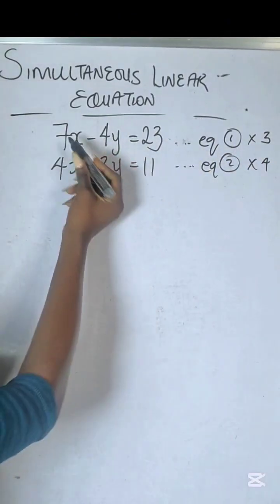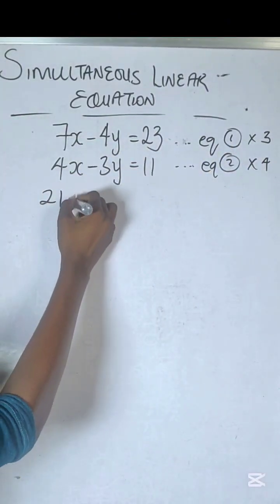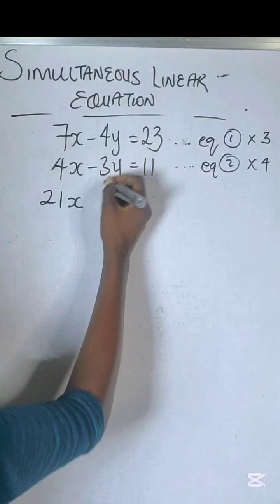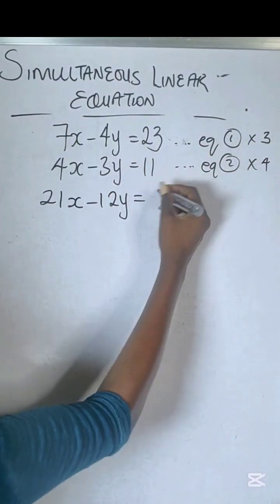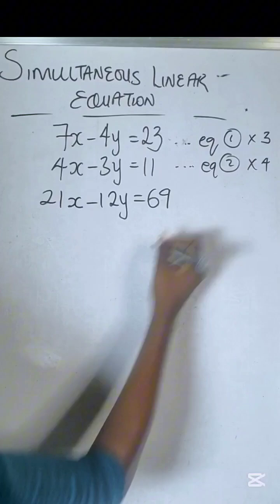3 times 7 is 21, 3 times -4 is -12, 3 times 23 is 69. This becomes equation 3.